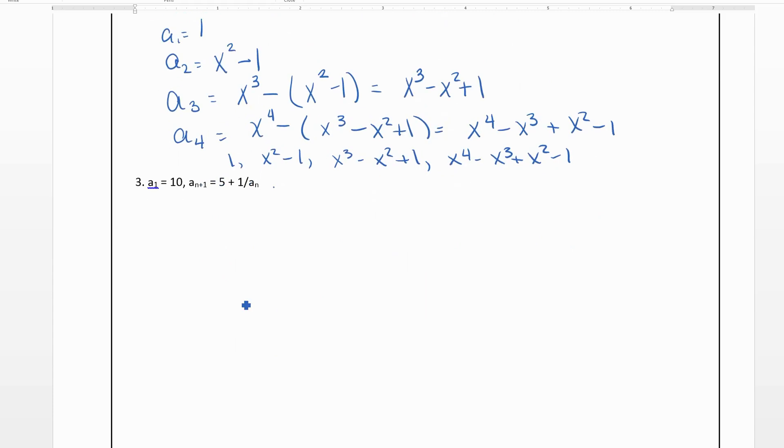Okay, and our third one here, we're saying our first term is 10. So then a₂ will take 5 plus 1 over 10, which would give us 5.1. a₃, we would take 5 plus 1 over 5.1.